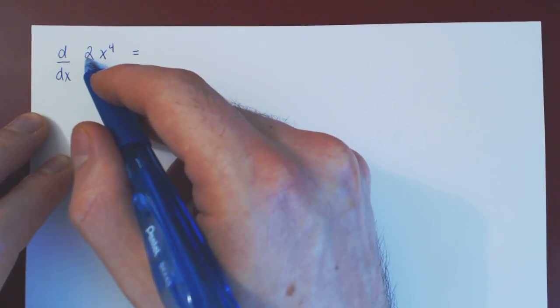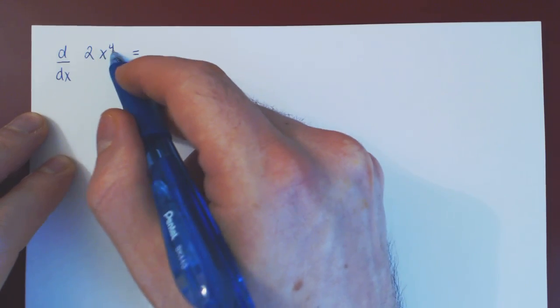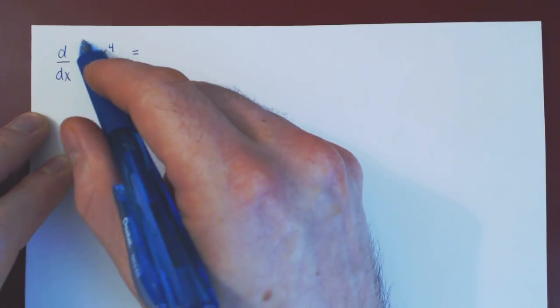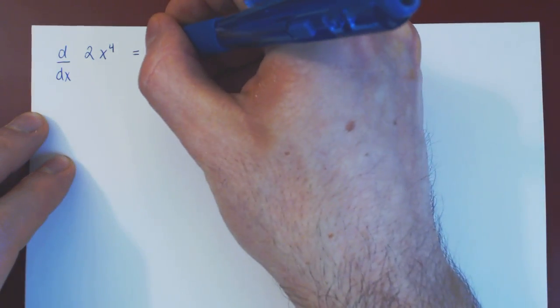Now here 2 is not alone, it is a scalar multiple of x to the 4. When you differentiate a scalar multiple of a function, the scalar multiple just stays there, so it will be 2 times.